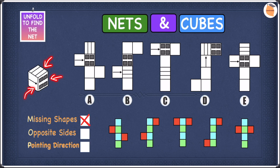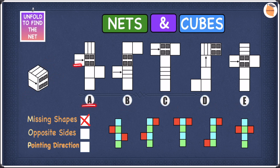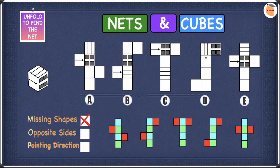If we find any of these shapes in options A, B, C, D or E on opposite sides, we cross that option off. In A we have the arrow, the window, and the stripy pattern. The arrow is on one color, the stripy pattern on another, and the window on a third — since they're all on different colors none of them are opposite, so we can keep A and move on to B. In B the arrow, stripy pattern, and window are all on different colors, so that's also fine.